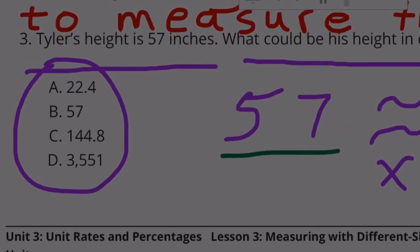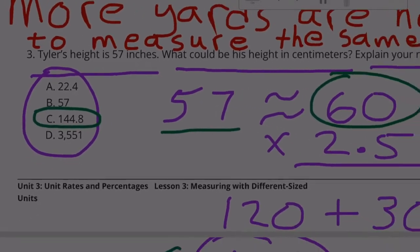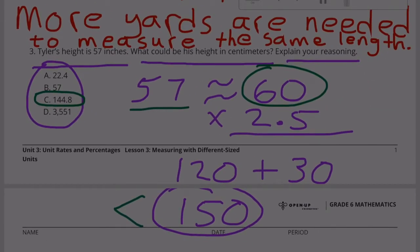And in fact, since I rounded up instead of it being 57, I rounded it up to 60, so this answer, 150, should be a little bit bigger than the correct answer. So when I look here at C, 144.8, that's the one that's closest to 150. And in fact, C is just a little bit smaller, and that's what I would have expected. So I'm going to go with C. 144.8 centimeters is about the same as 57 inches.